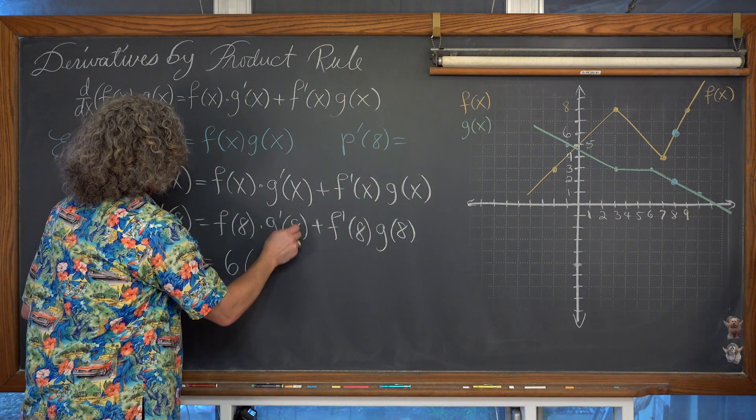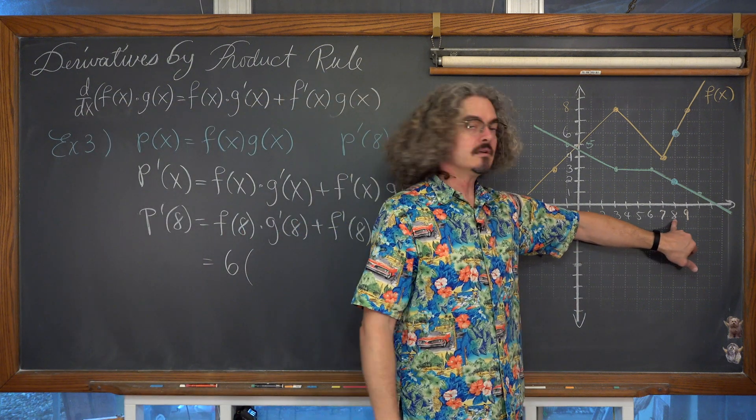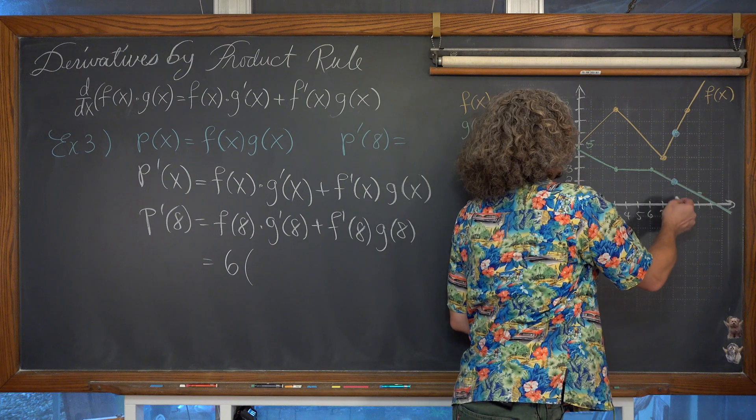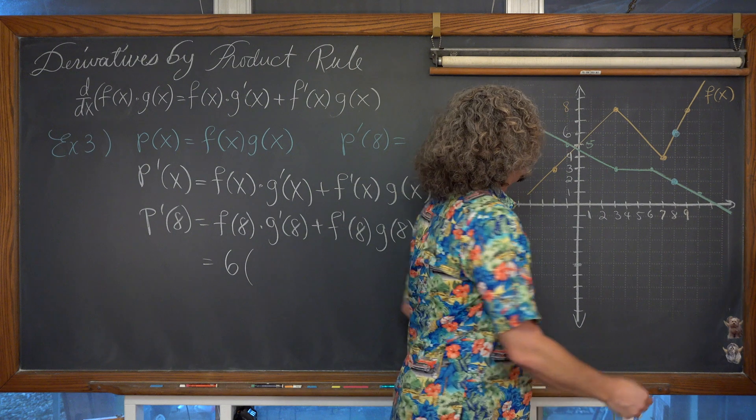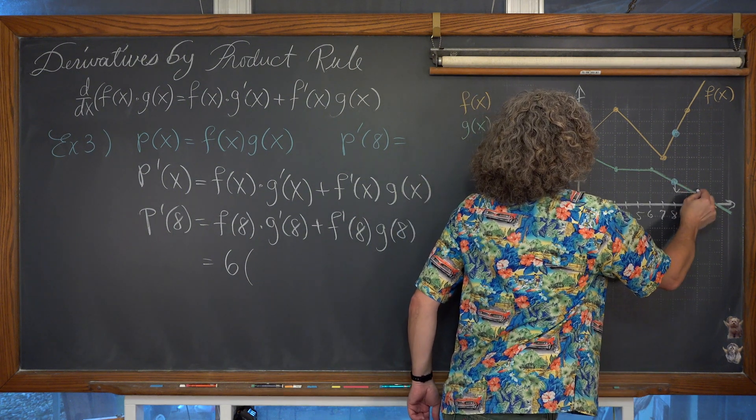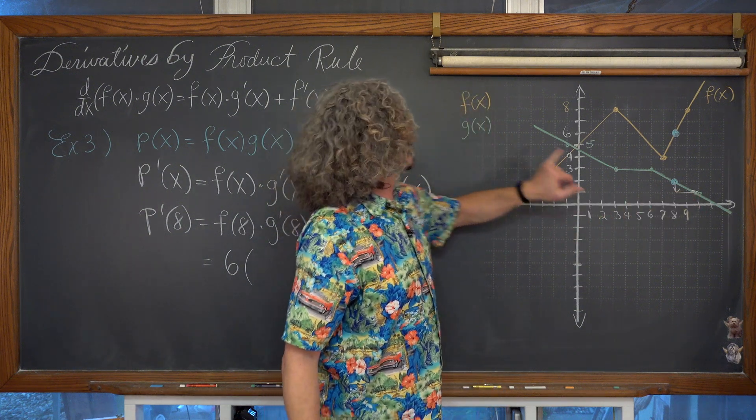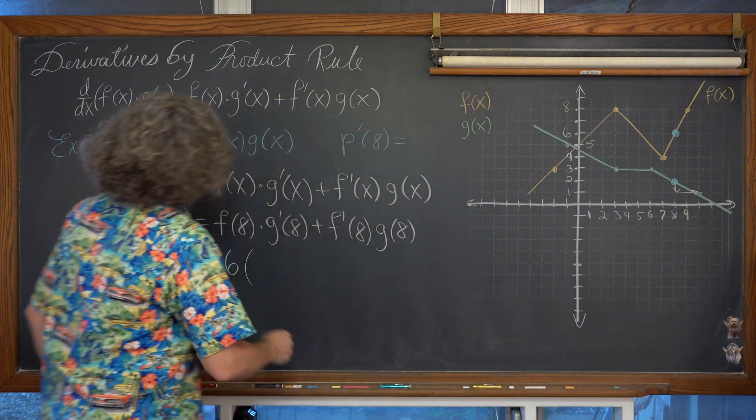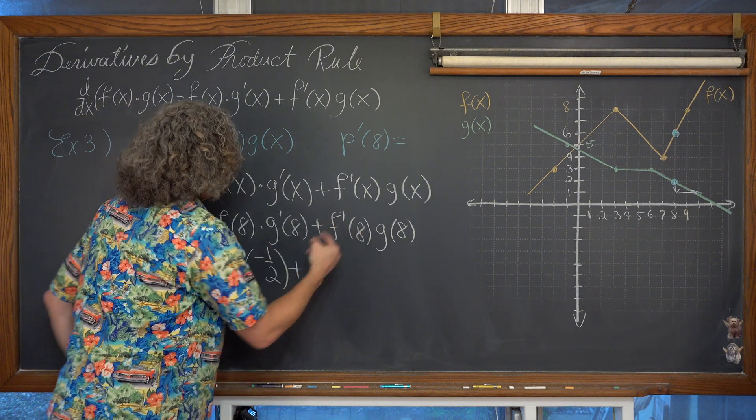So g'(8), the slope of function g at 8. Coming over here to 8, to the left around that neighborhood, to the left and right of 8, for a small neighborhood, we have a constant slope. And we see that, looking at the graph paper, if I go down 1 and over 2, I hit the graph of g again, which is the green one. So we're looking at -1/2. Plus, now f'(8). What is f'(8)? What is the slope of the function f, specifically when you're at or just immediately around 8?